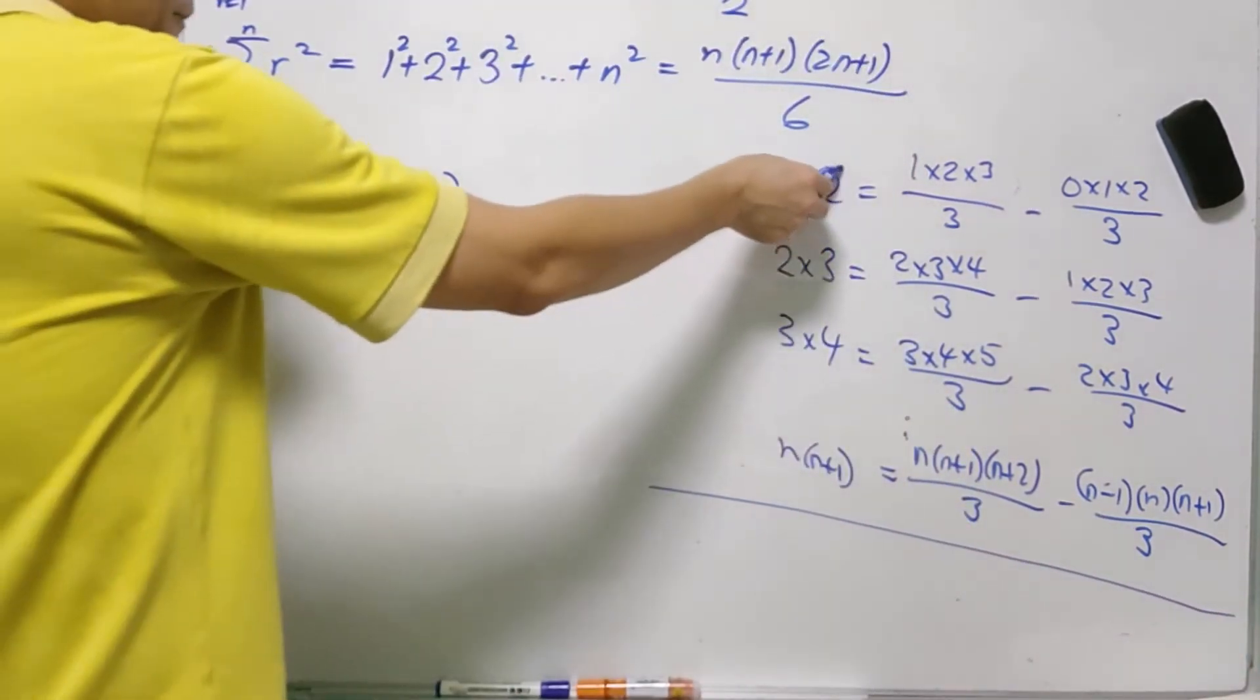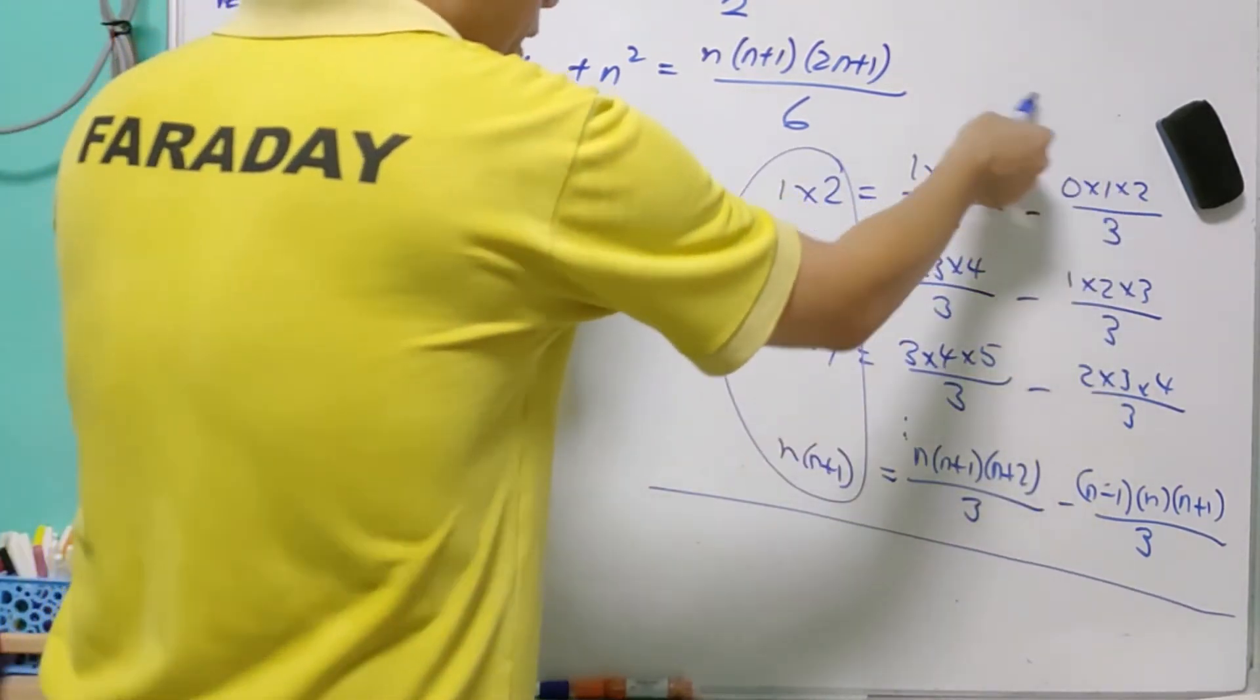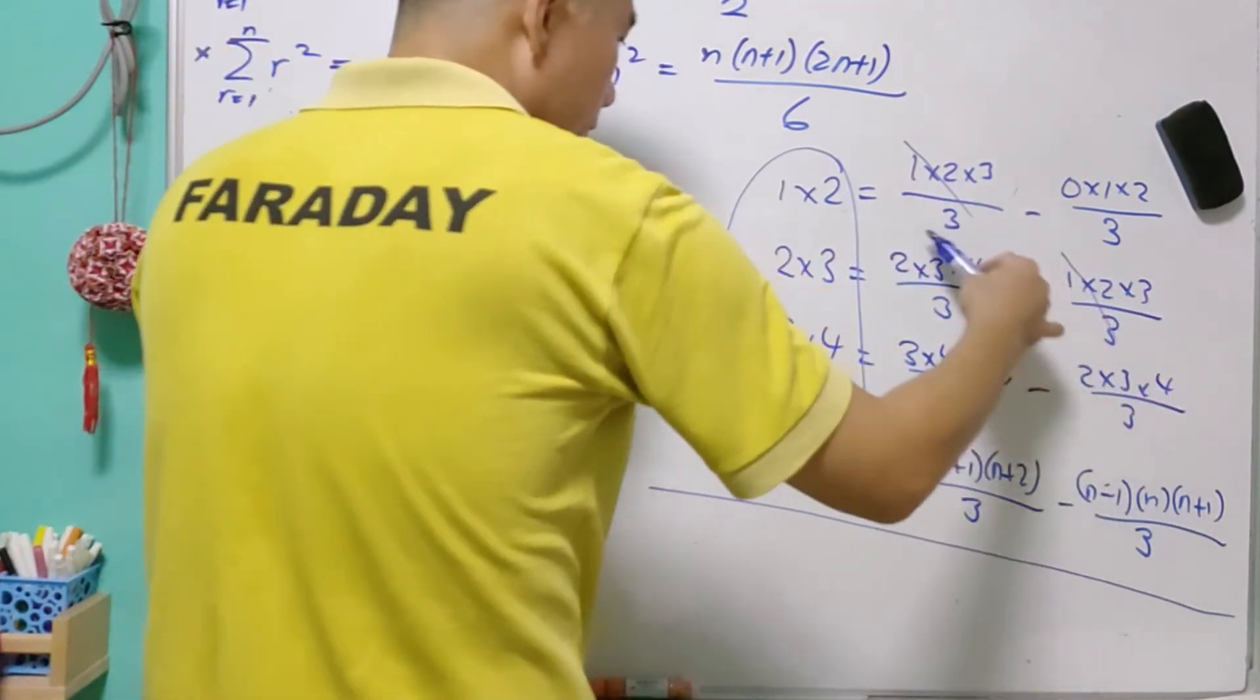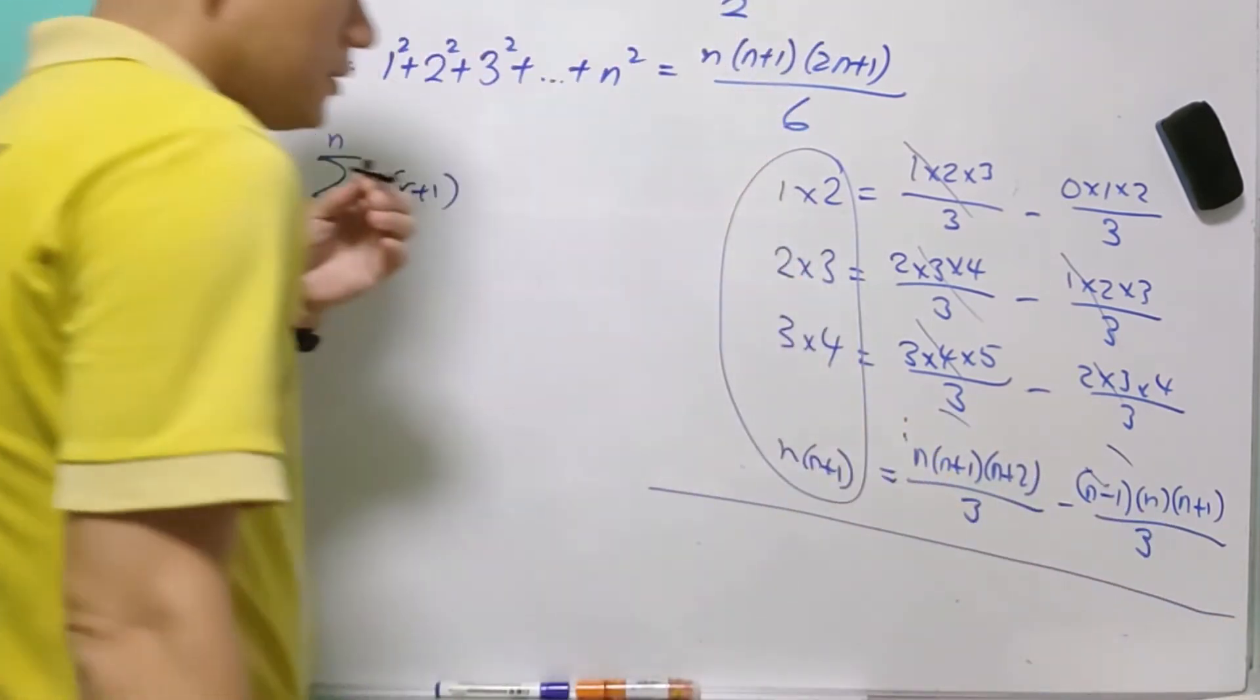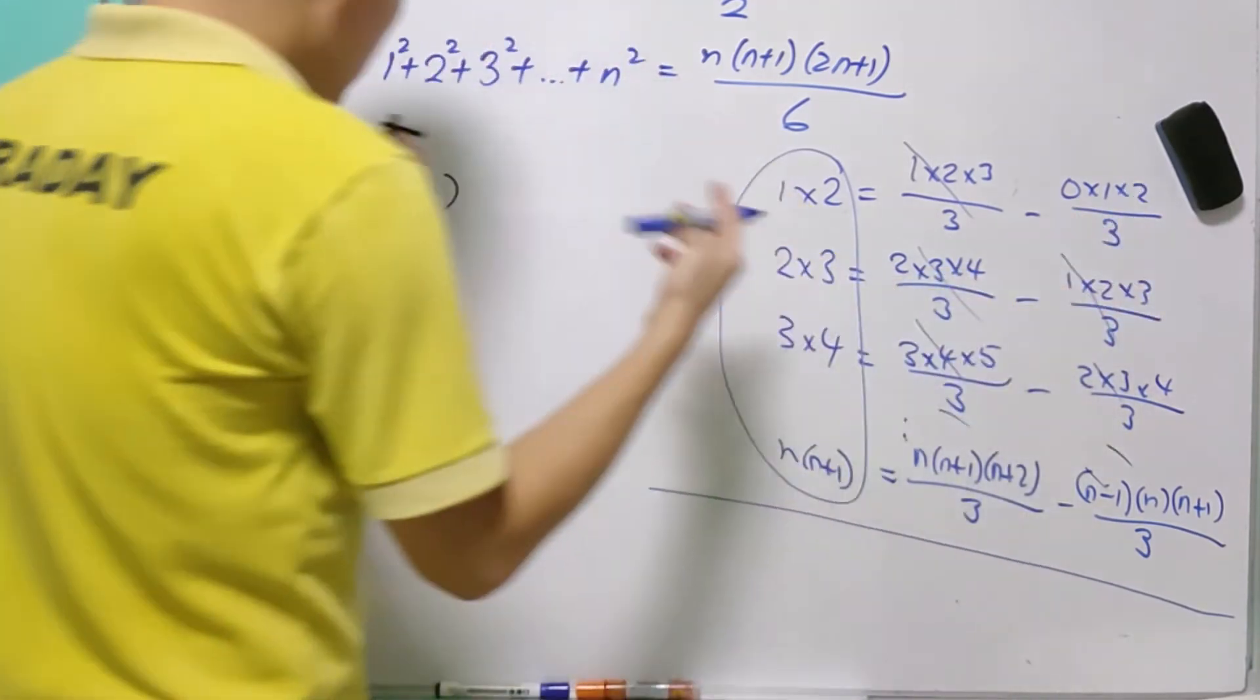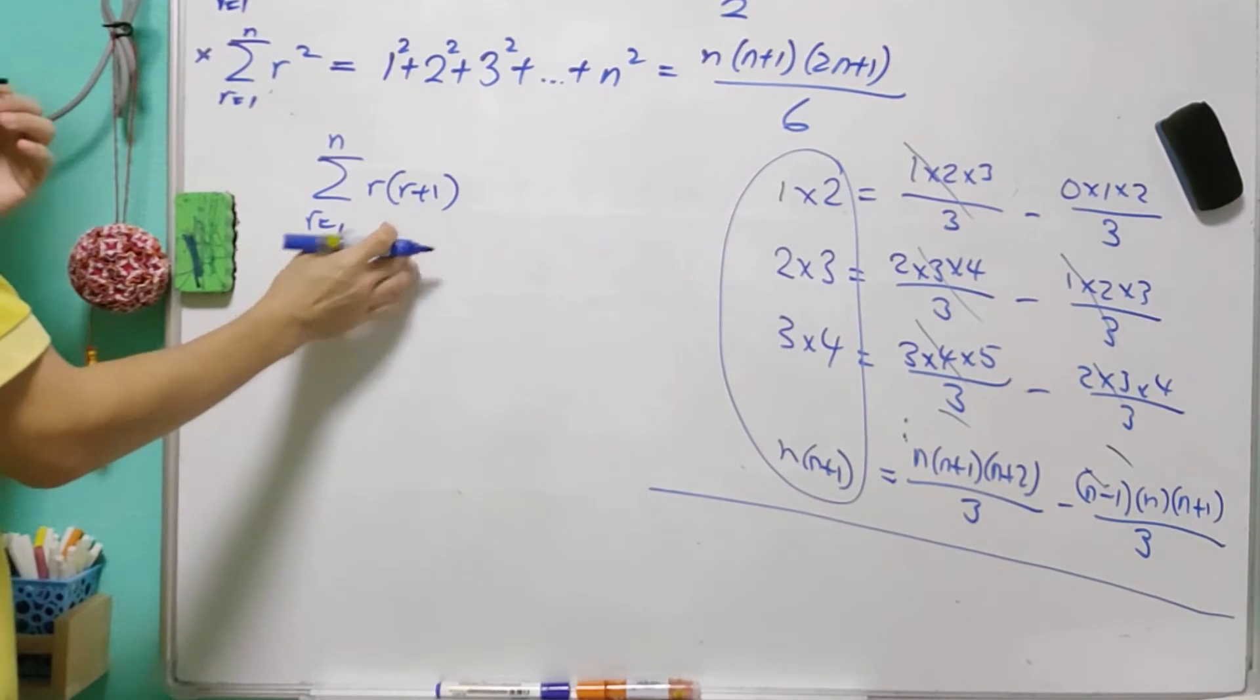Now, when we sum up everything here, then we also need to sum up everything here. And you can see that these two will be cancelled off, these two will be cancelled off, and these will cancel off with these, and these will cancel with that. So what we left is only this minus 0.